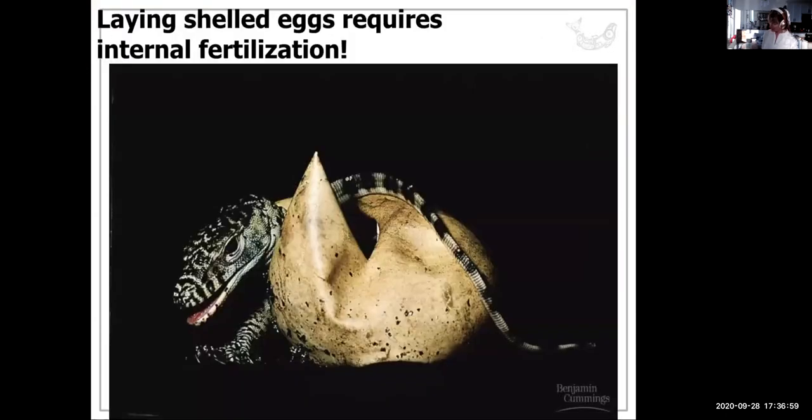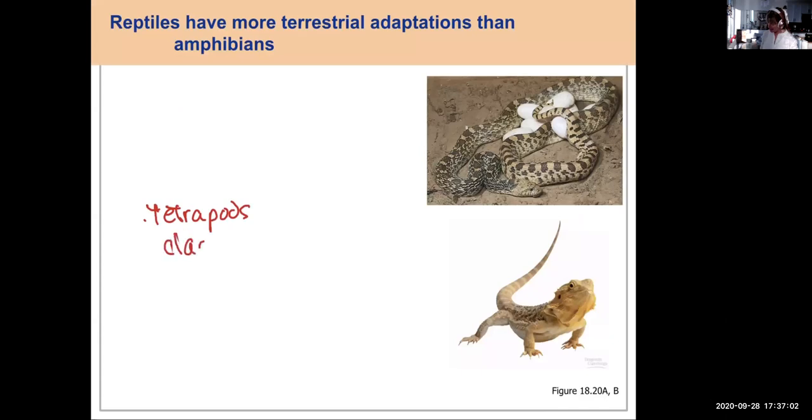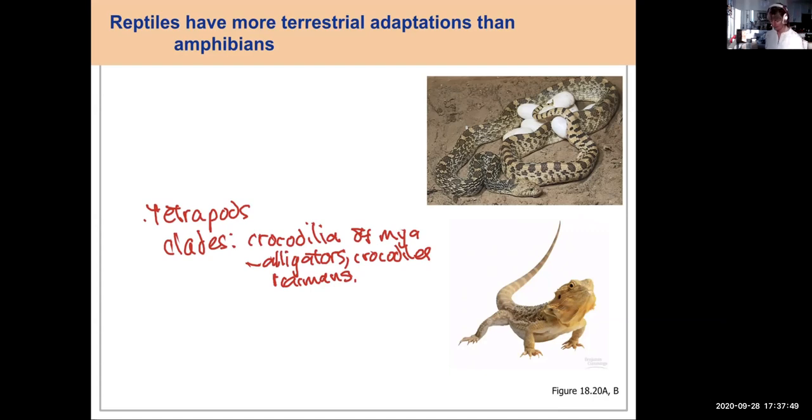Clades are the Crocodilia. That's the most ancient clade, about 84 million years ago is when they arose. And those include your alligators, your crocodiles, and your caiman. So alligators, there's really only two alligators. There's the American alligator and the Yangtze alligator that lives in the Yangtze River. Those are the only two.